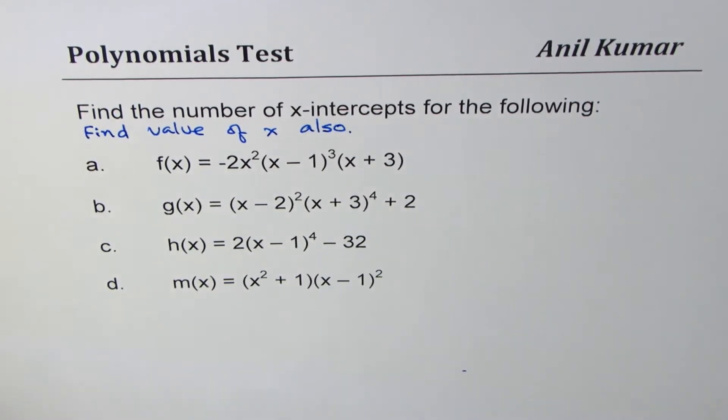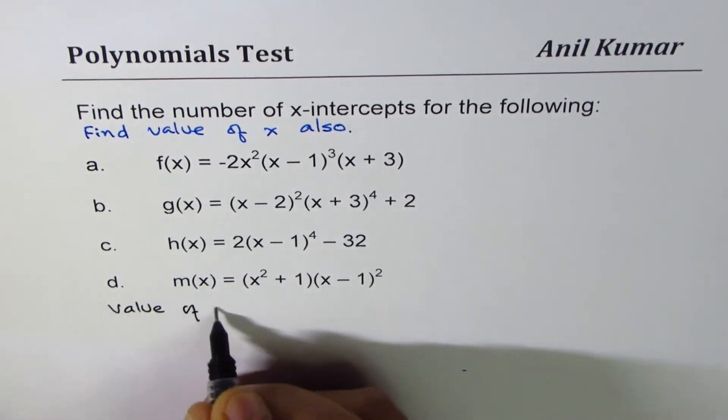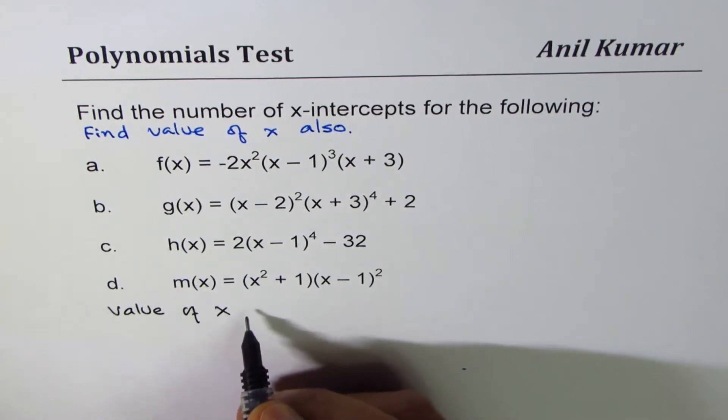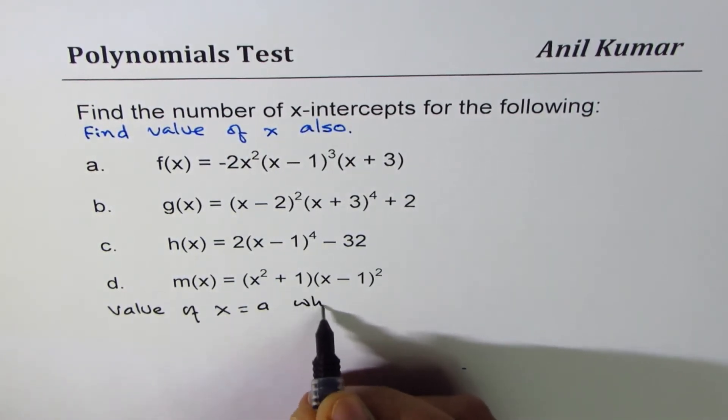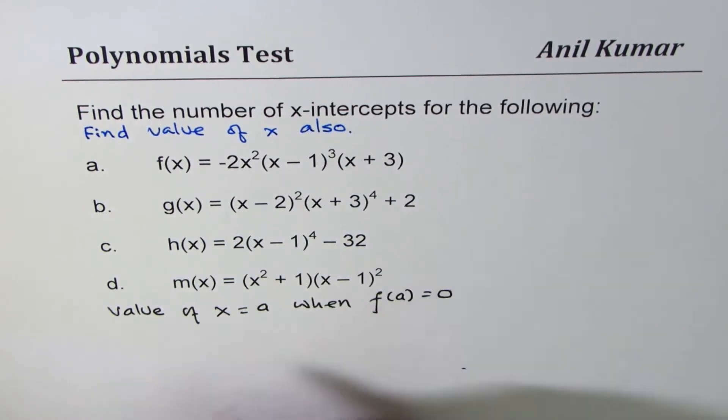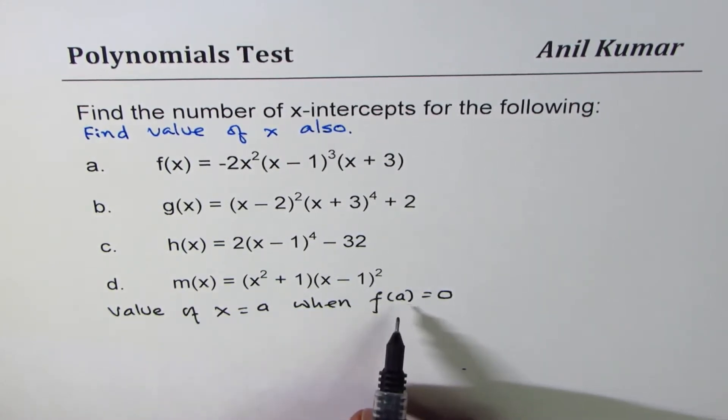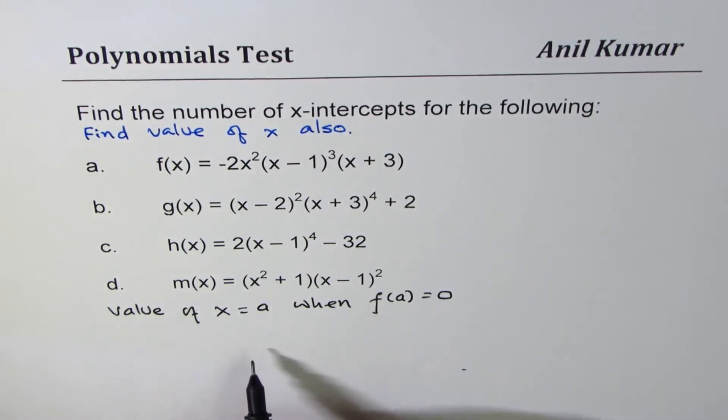When we see x-intercept, that means we are looking for value of x. Let us say x equals 3 when f of a is 0. So whatever value of a makes this function 0 is its x-intercept.